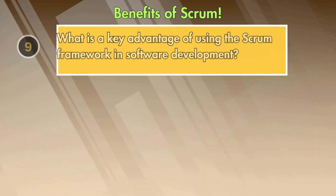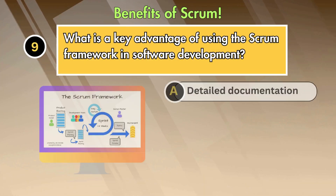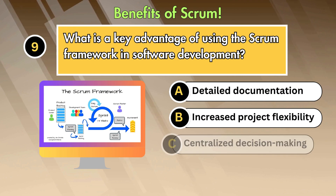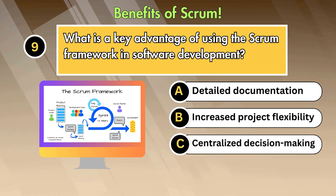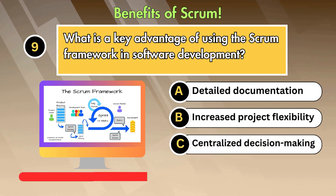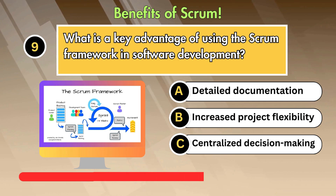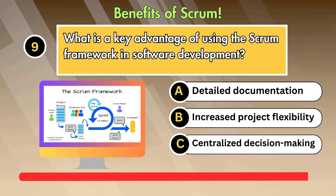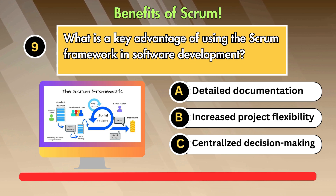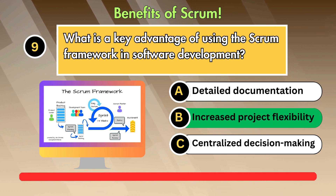Question 9: What is a key advantage of using the Scrum framework in software development? Option 1: Detailed documentation. Option 2: Increased project flexibility. Option 3: Centralized decision making. Answer is: Increased project flexibility.